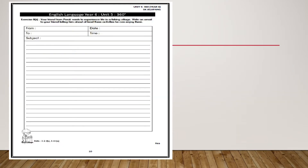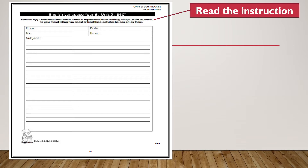Your task for today is you need to write an email. Always read the instruction. Your friend from Perak wants to experience life in a fishing village. Write an email to your friend telling him about at least 3 activities he can enjoy there.